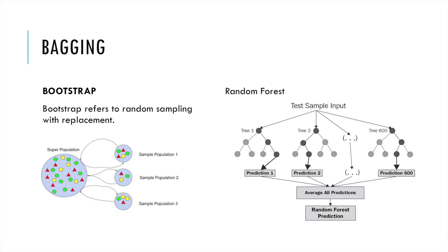The typical algorithm for bagging is called random forest. For the whole data set, the sample inputs are put into a bunch of buckets. In the picture, we put them into 600 buckets, and for each one we use the decision tree algorithm to train it. For each tree we get a prediction, and when we predict a sample we aggregate all the predictions to get the final result. So this is the random forest prediction.